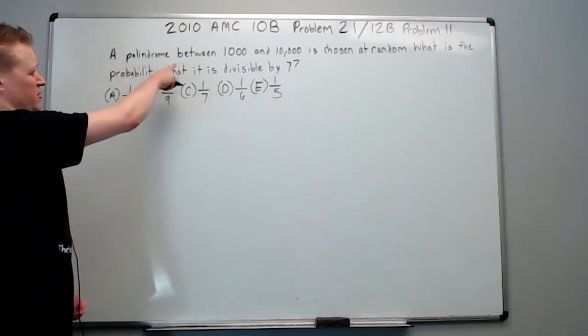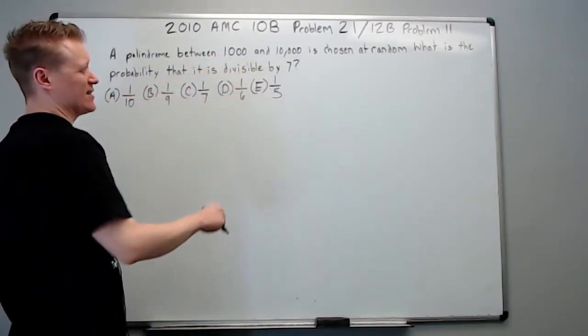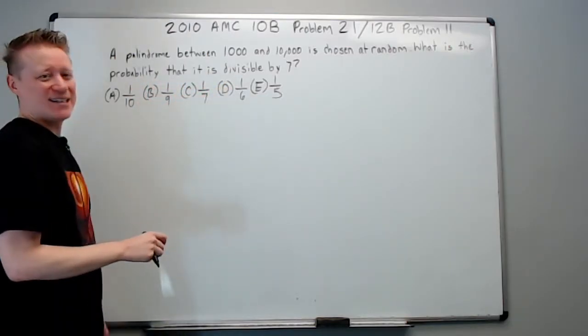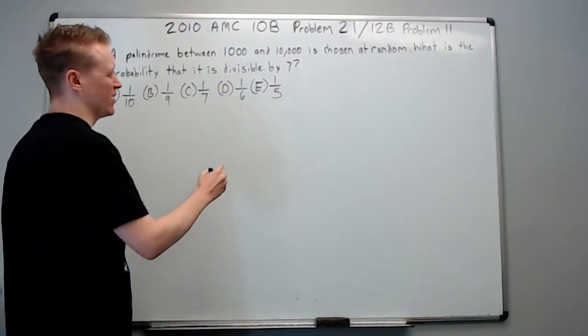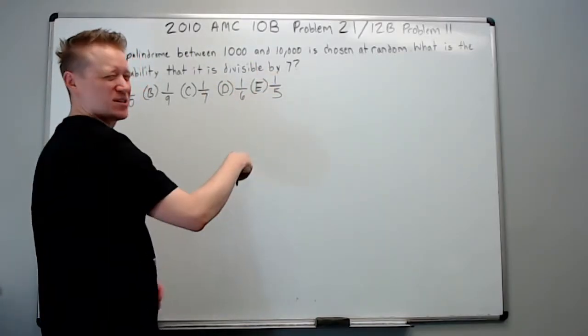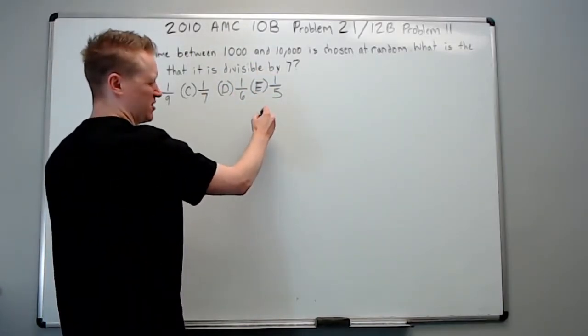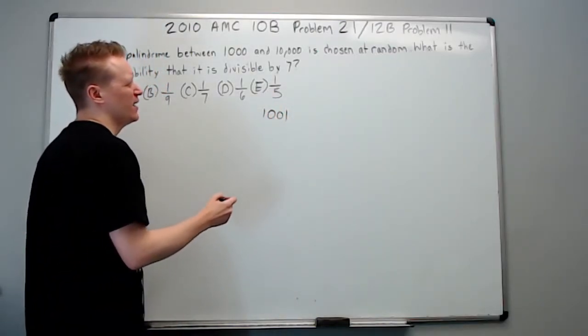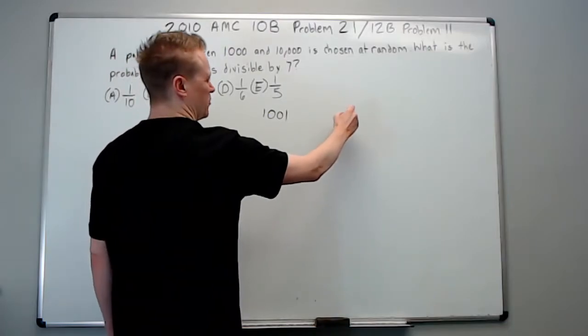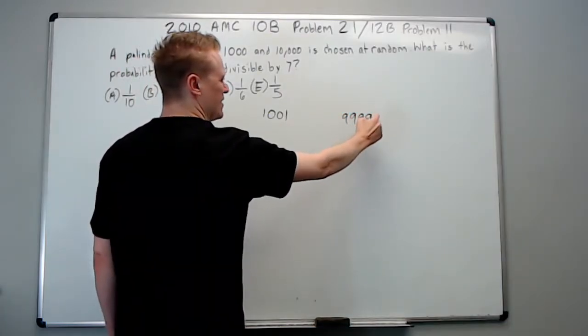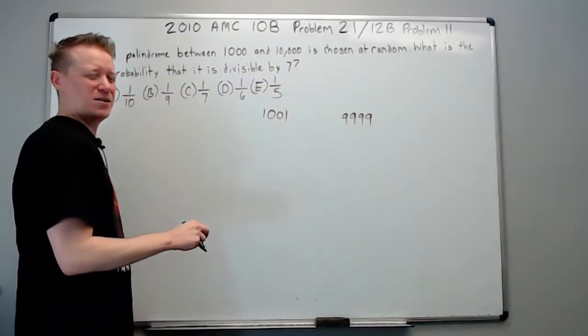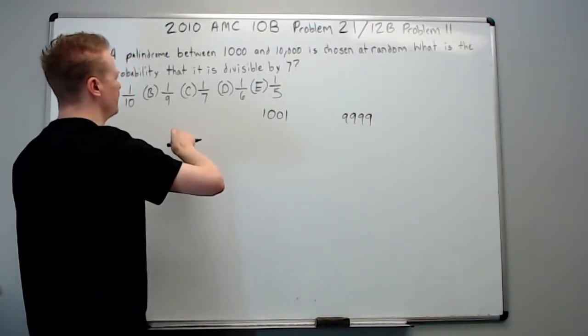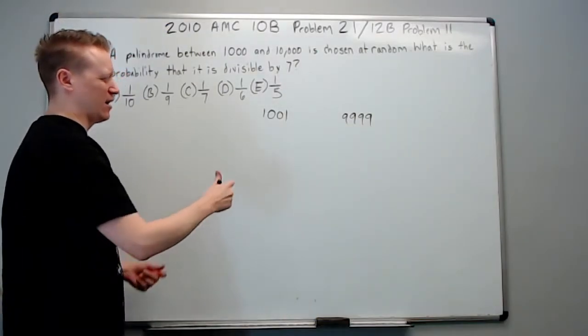A palindrome between 1,000 and 10,000 is chosen at random. What is the probability that it is divisible by 7? So it's between, so it's got to be more than 1,000. Let's just go up one. 1,001 is a palindrome. What's the last possible number? 9,999. That's also a palindrome. So we're in this range.